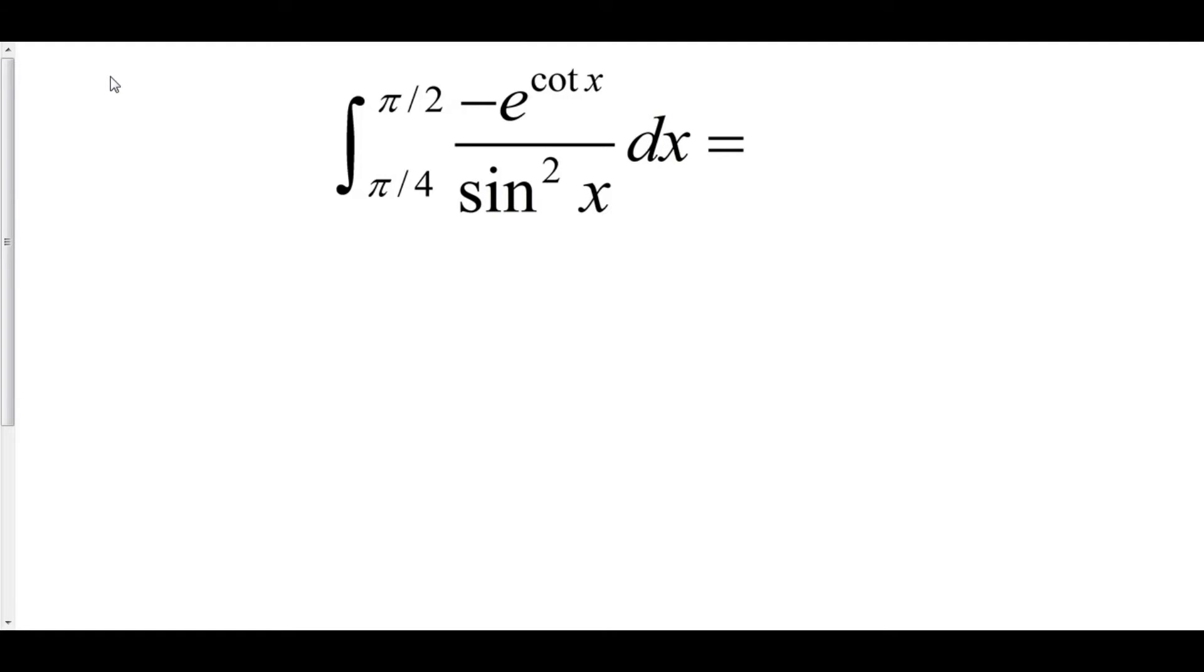The integral of negative e to the cotangent x over sine squared x from pi over 4 to pi over 2. Holy mother of all gods, this is a behemoth. Not only do we have a nasty integrand that we've got to deal with, but also we now have limits of integration. So let's deal with this one step at a time.